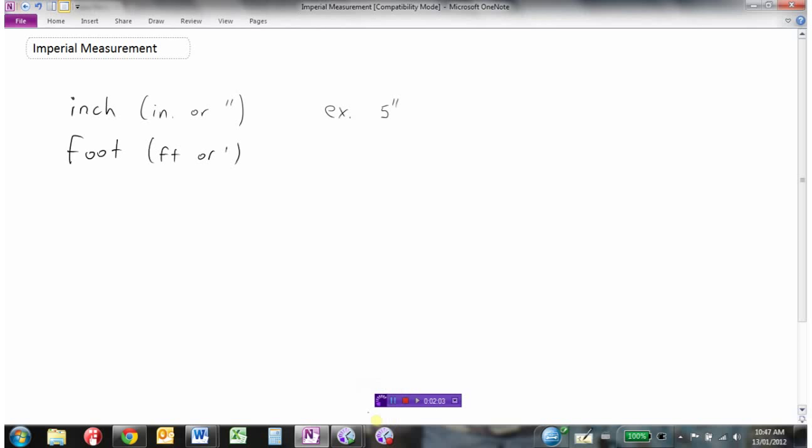The next measurement up is the foot, usually abbreviated FT or more commonly with one little tick mark. For example, you might say somebody is six feet tall. A good reference for a foot is the length of your foot, but keep in mind that's a rather large foot. It's probably about the length of a full-size adult man's foot.